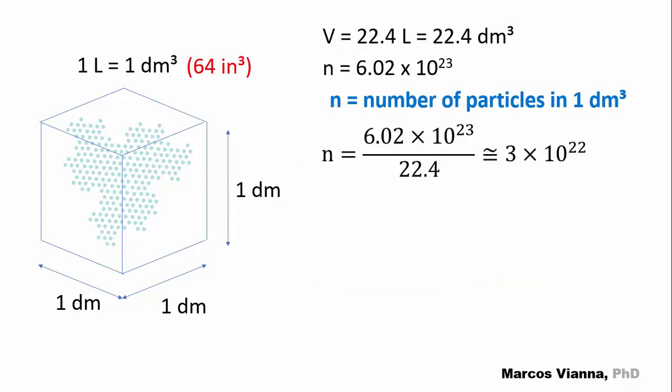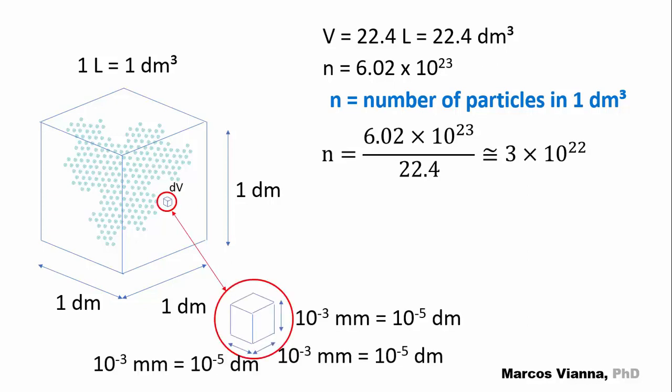Now, the question is, how many particles will exist in this DV whose side equals 1 micron, or, using imperial units, in 4 times 10 to minus 5 cubic inches?